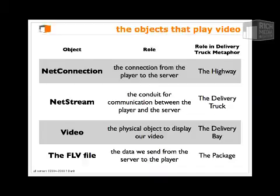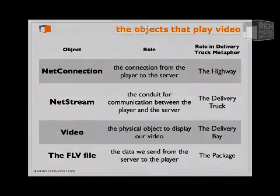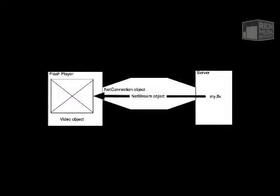In the metaphor of the delivery truck, the NetConnection is the highway — the thing over which the NetStream, or the truck, carries the package, which is the FLV file, to the video, which is the delivery bay. This diagram illustrates the relationship: an FLV is hosted on a server, a NetConnection is established connecting the server to the Flash player, and then the NetStream carries the FLV over the NetConnection straight to a video object running inside the Flash player.